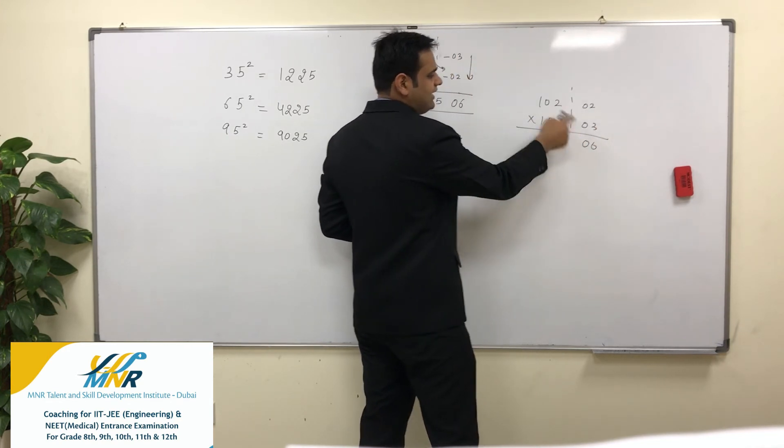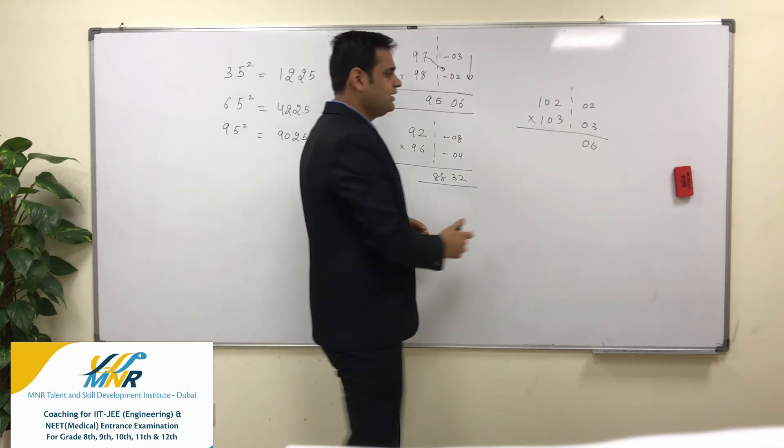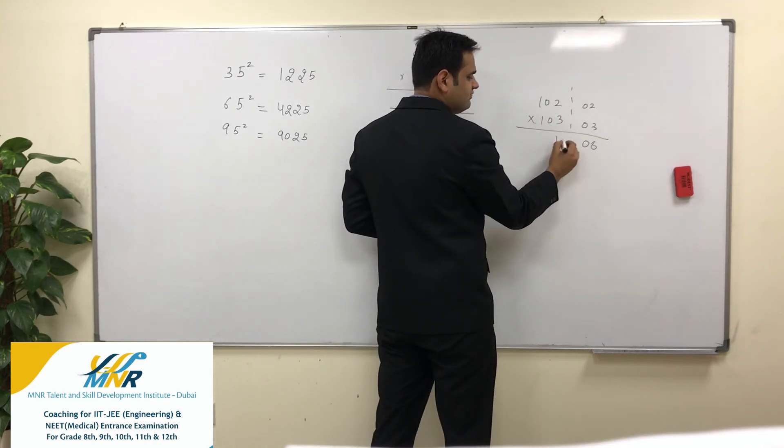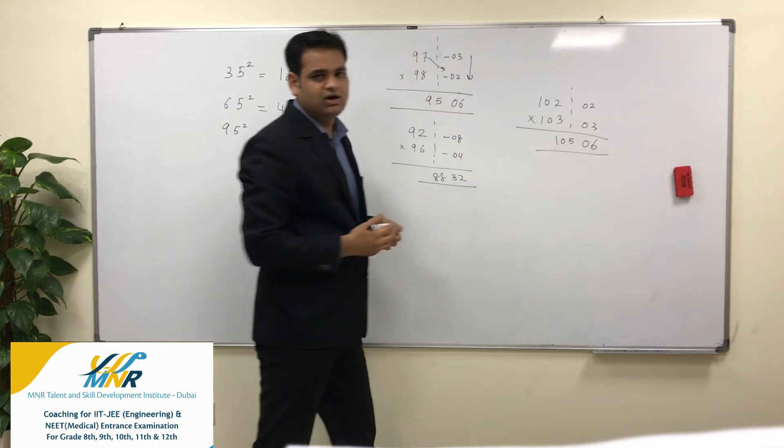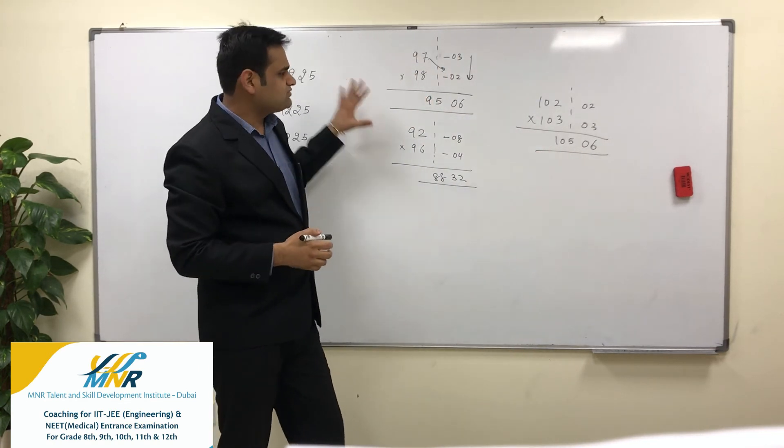And 102 plus 3 is 105. So my answer is 10506.